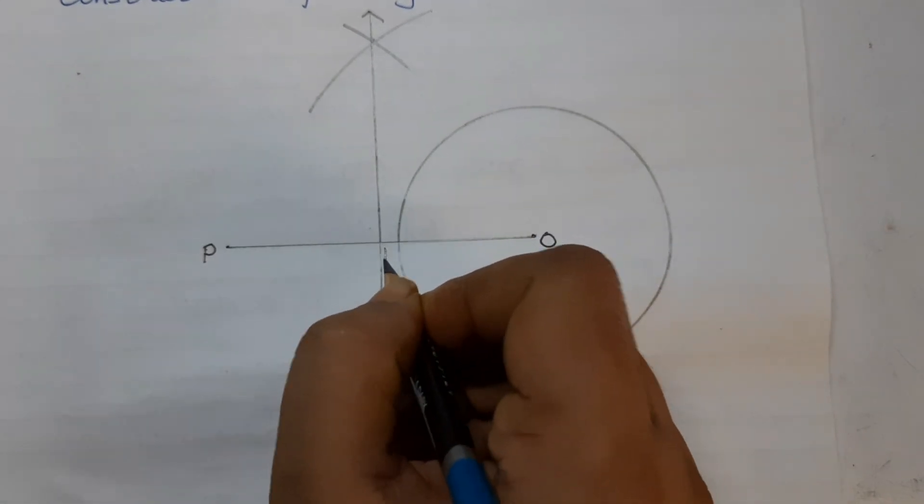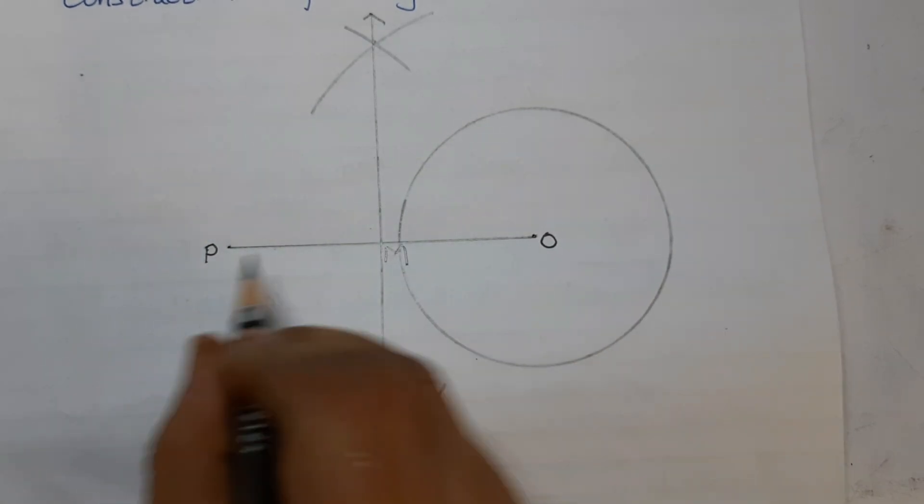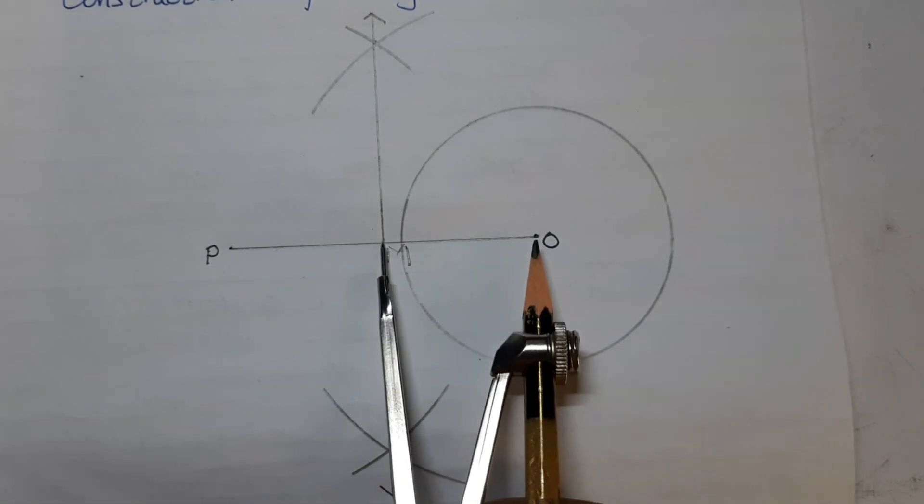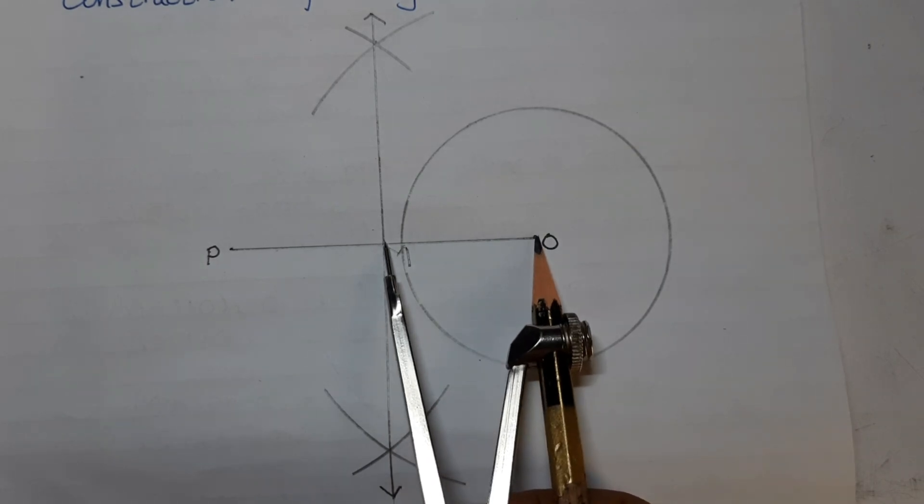Let M be the midpoint of PO. Taking M as center and MO as radius, draw a circle intersecting the given circle at Q and R.